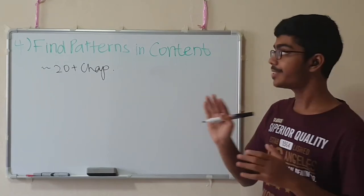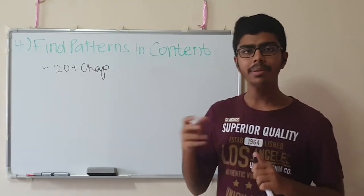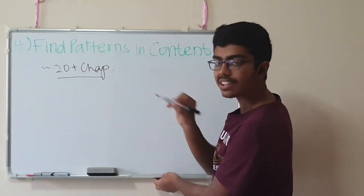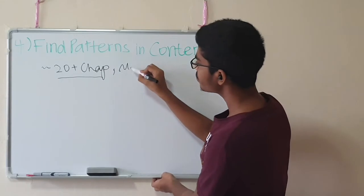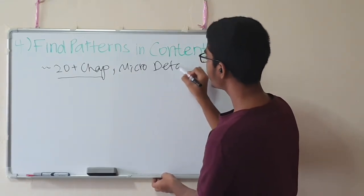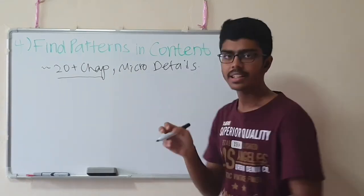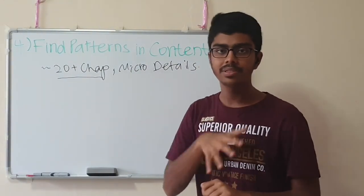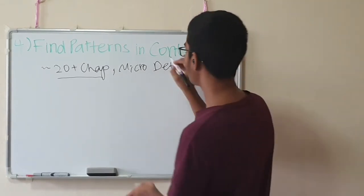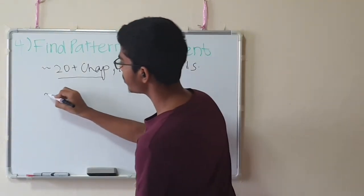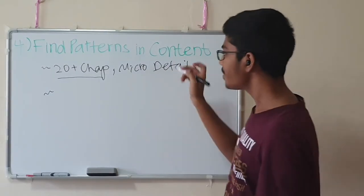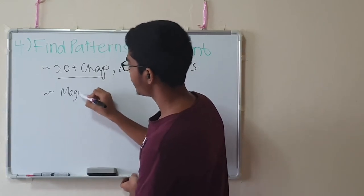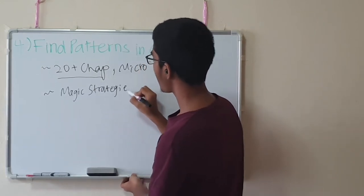The fourth strategy I can give you is to find patterns in content. There's so much to study for chemistry—there's 20 plus chapters, and there's so much micro details you guys will have to remember. How do you see the macro concept? How do you cheat your way? How do you find a fast way to recall the knowledge? There's two ways you can find patterns when you're trying to remember content—not just memorize so many micro details. One way is to define magic, and you can include acronyms.